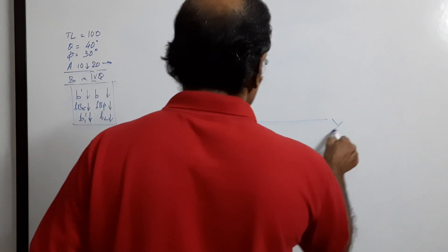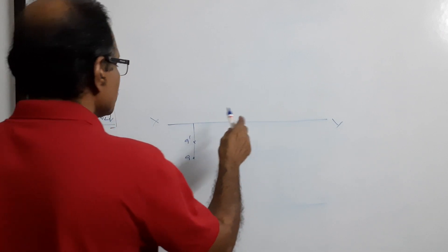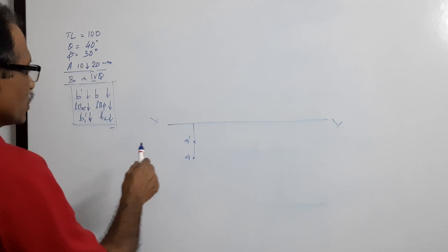X-Y line. A, A' both are to be drawn downwards.